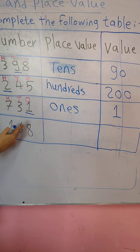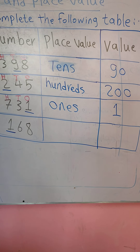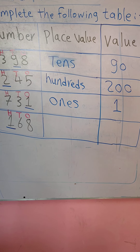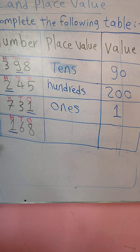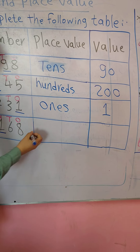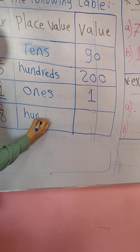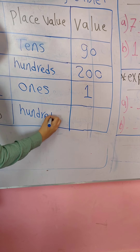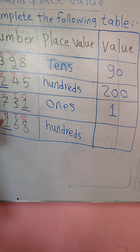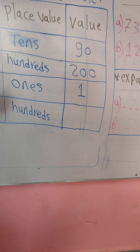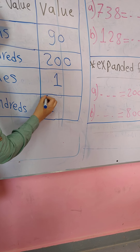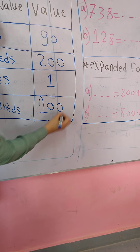We have 168. I'll write H, T, O. The place value of number 1 — number 1 is in the hundreds place. The value of number 1 is 100, so I write number 1 with two zeros: 100.